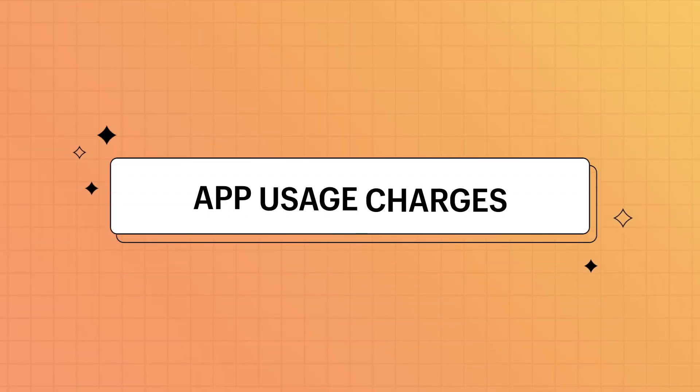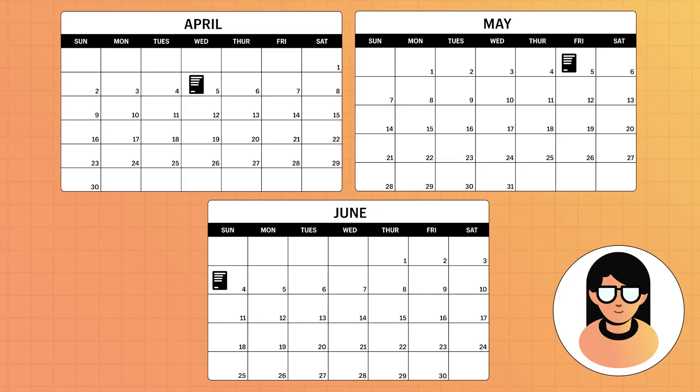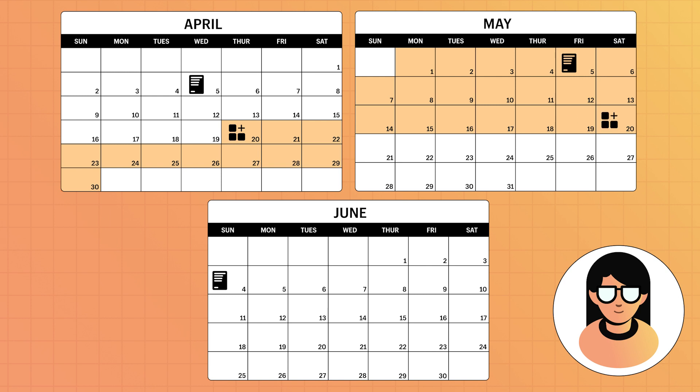But what happens if you're using an app that has subscription charges based on usage? Usage charges are based on how much an app is being used. If Priya downloads an app on April 20th, the app would have a 30-day window until May 20th.